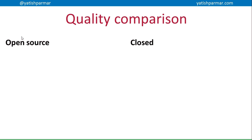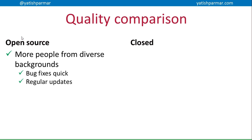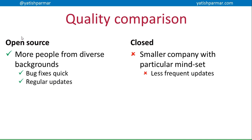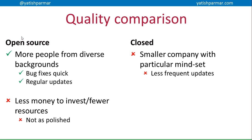Comparing open and closed source software in terms of quality: with open source software you have more people from diverse backgrounds working on it. With Linux, it's estimated there are an average of nine changes per hour to the source base around the world. Linus's Law states that the more eyeballs looking at a problem, the more likely someone can spot it and someone else can fix it. So with diverse contributors you get fast bug fixes and regular updates, compared to closed source where a smaller team with a particular mindset may produce less frequent and less creative fixes.